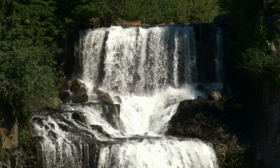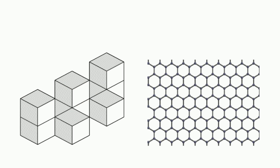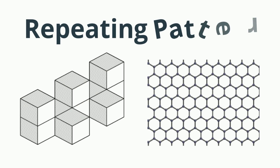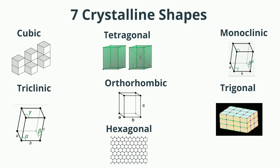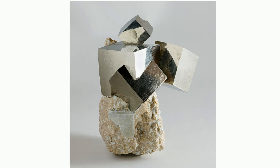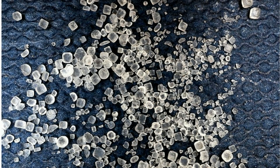A crystalline structure could be described as repeating. The crystal shape is determined by the arrangement of the atoms or molecules within the crystal. Each mineral has a definite crystal structure, and all minerals can be grouped into crystal classes according to the kind of crystals they form.